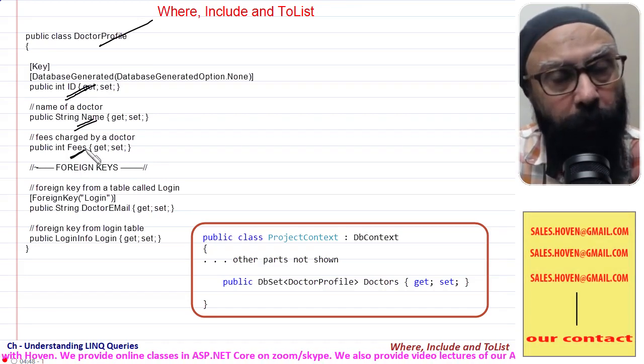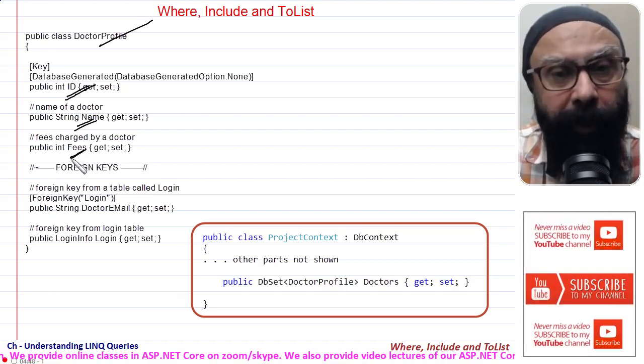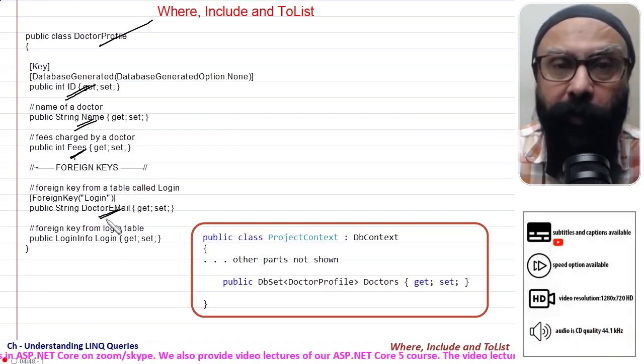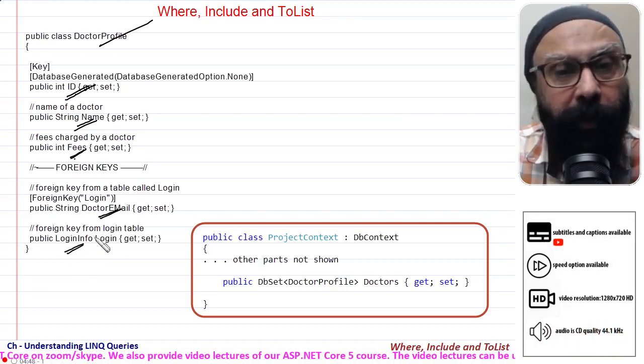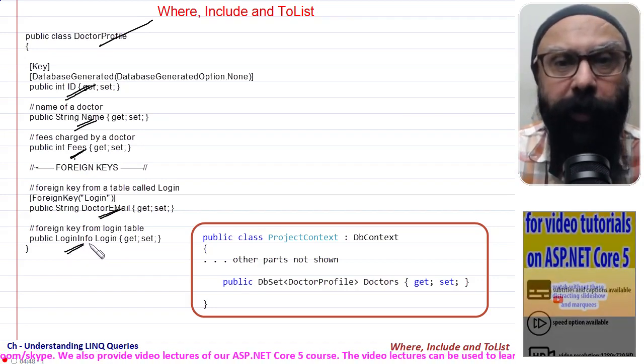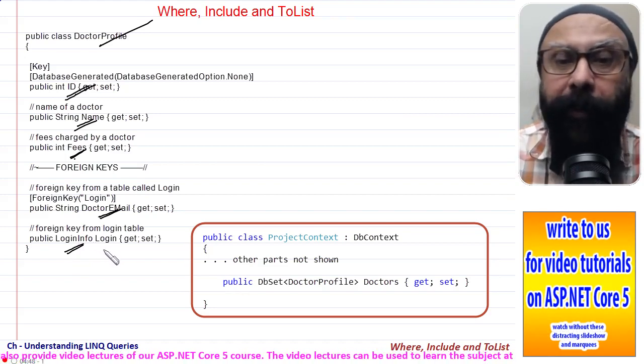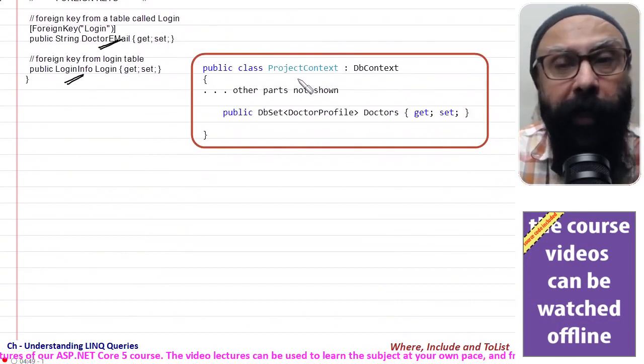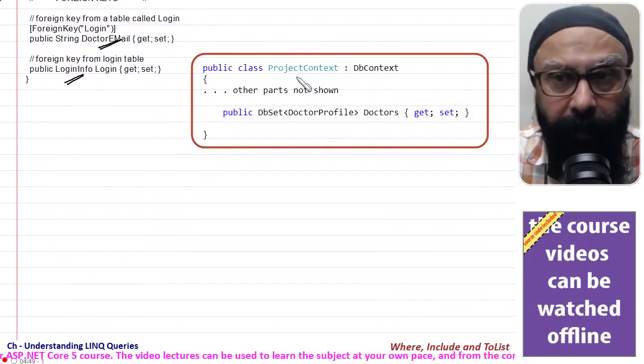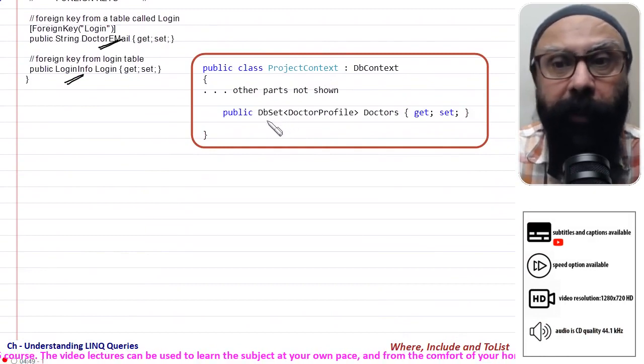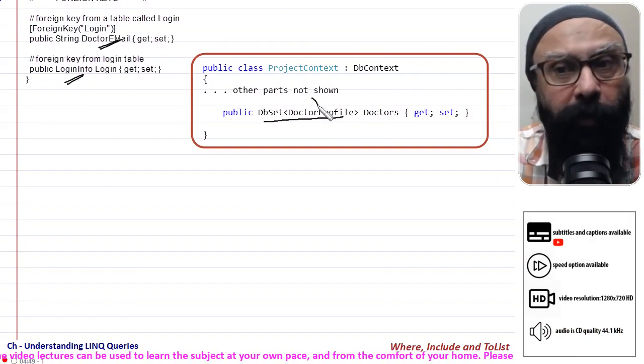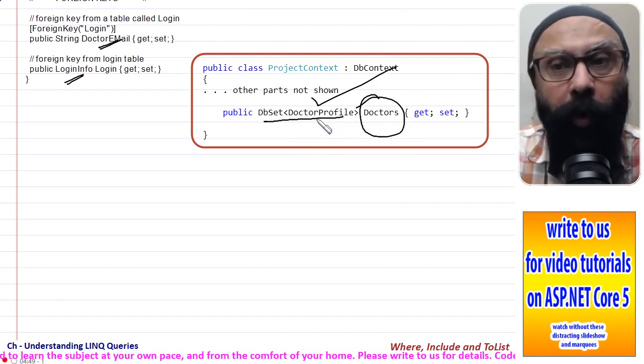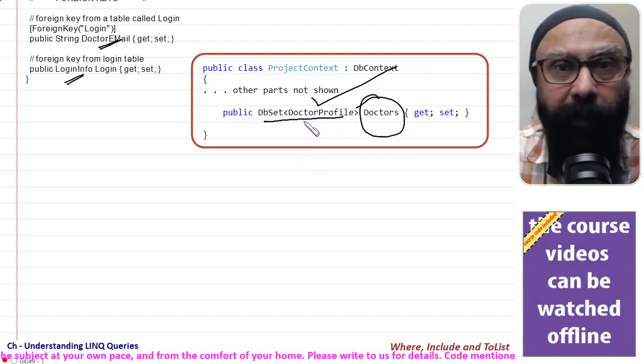There is a property called Fees also. In addition, there is a foreign key for DoctorEmail that comes from another table called LoginInfo. So this is the model that we will be discussing. Let us also suppose that we have our ProjectContext in place, and this ProjectContext contains a DbSet of DoctorProfile, a property called Doctors which gives me access to all the doctor profile objects in the table.